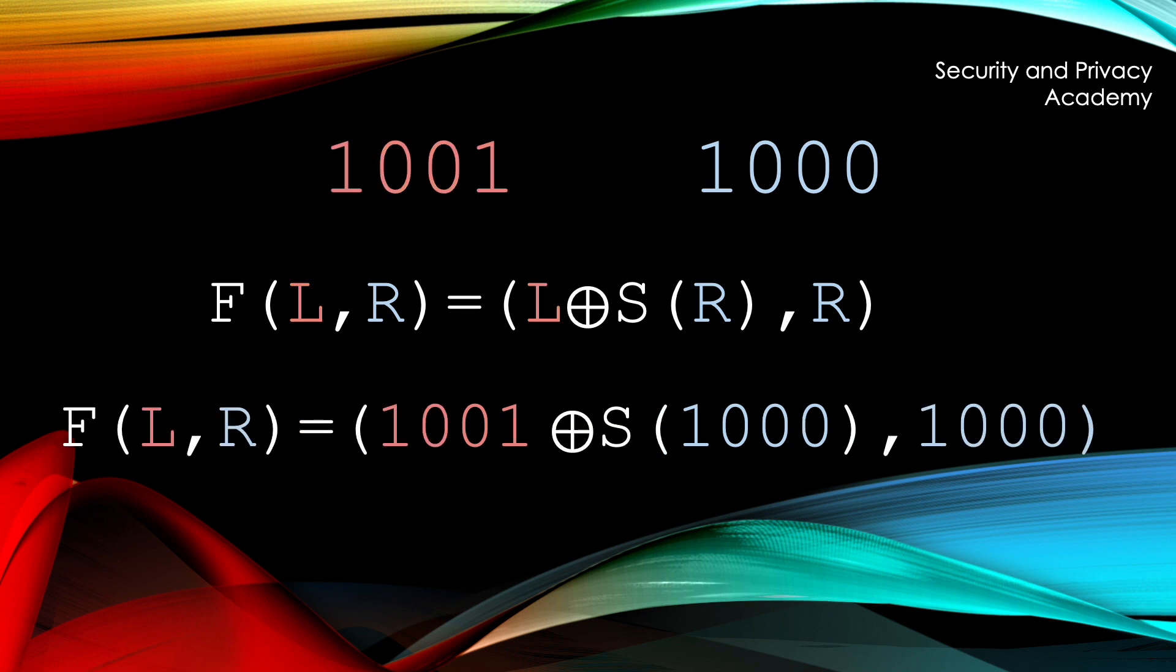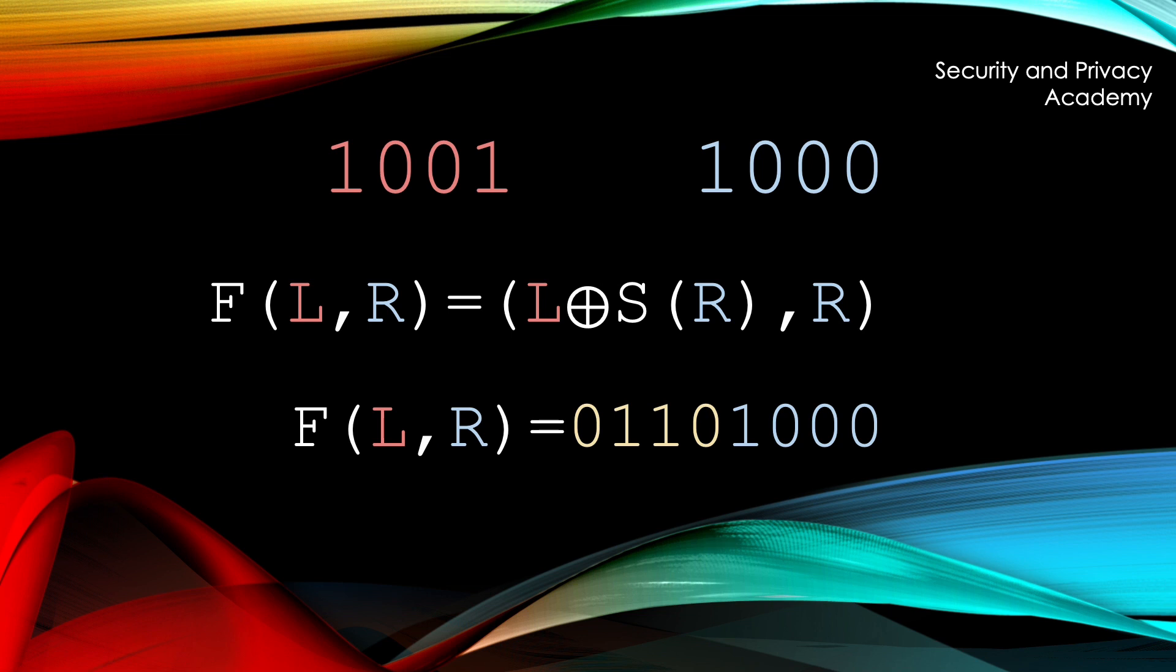As said before, we just apply the Feistel network again, which yields this result. We apply function S again, so we turn all the bits on the right part to 1. XORing the inner part results in these bits, which are indeed our initial bits.